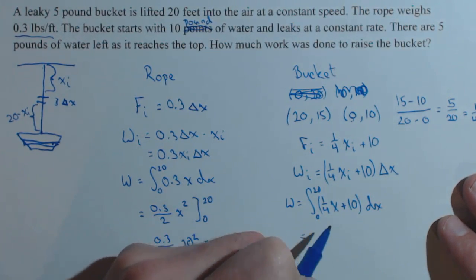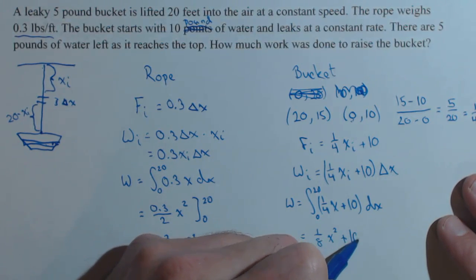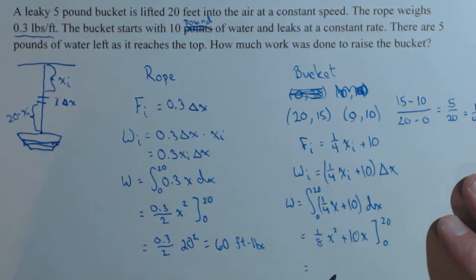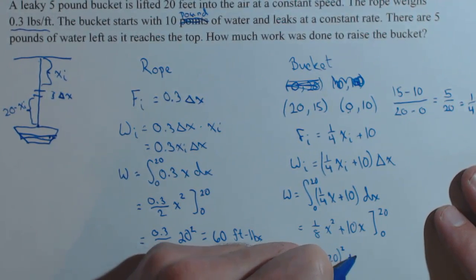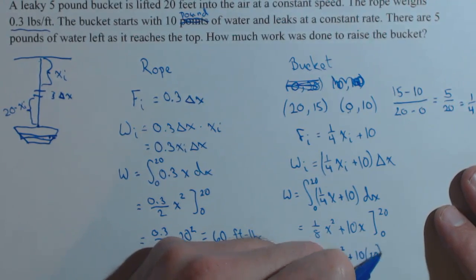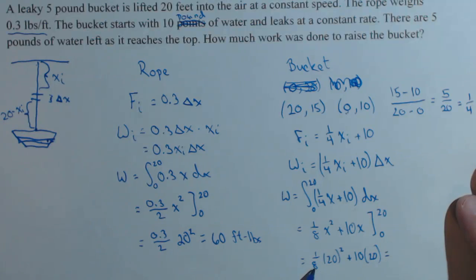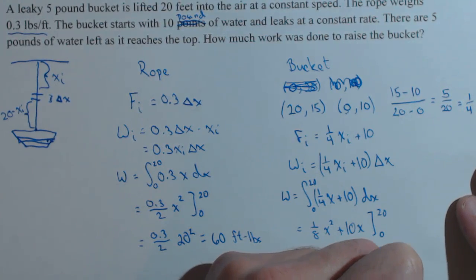So calculating this, we get 1 eighth x squared plus 10x from 0 to 20. So we get 1 eighth times 20 squared plus 10 times 20 minus 0 again. And we are going to get, so 20 squared is 400, divided by 8 is 50, plus 200. And we get 250 foot-pounds.